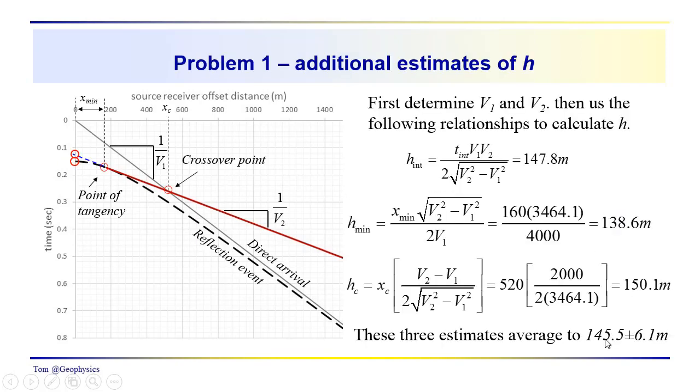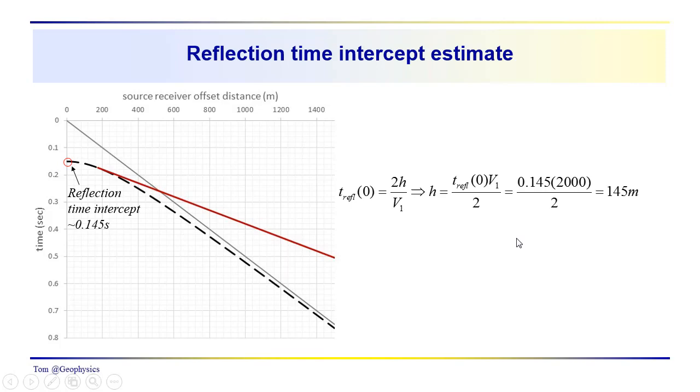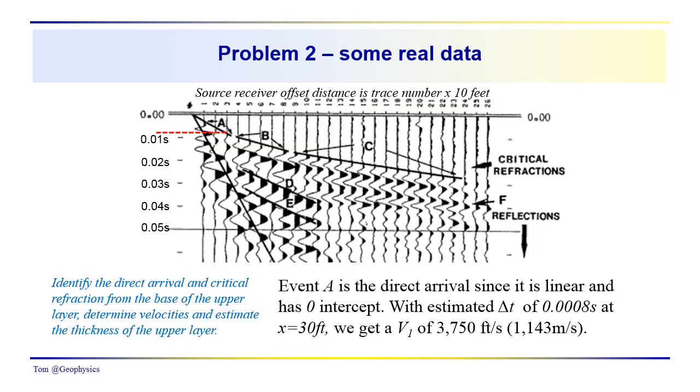So, you can see that these are very close to the average estimate that we just got. So, that worked out fairly nicely. It's a fairly straightforward process, I think you can see. Now, problem two, we had to identify the direct arrival, the critical refraction from the base of the upper layer, determine velocities, and estimate the thickness of the upper layer.